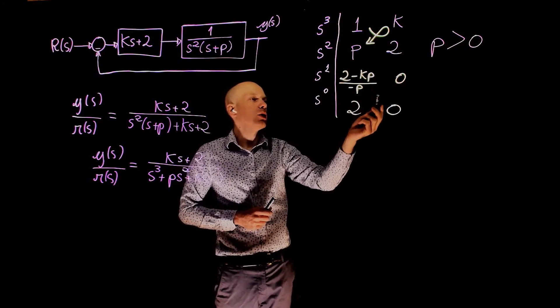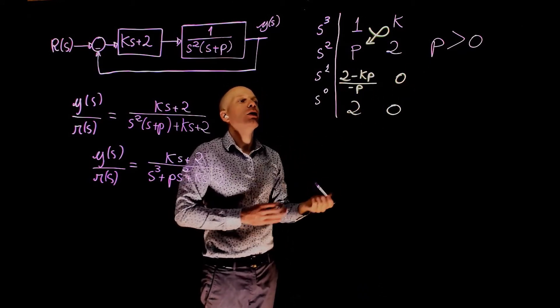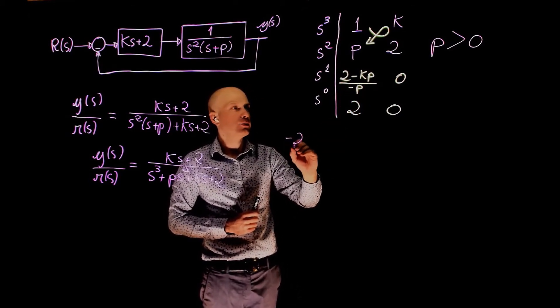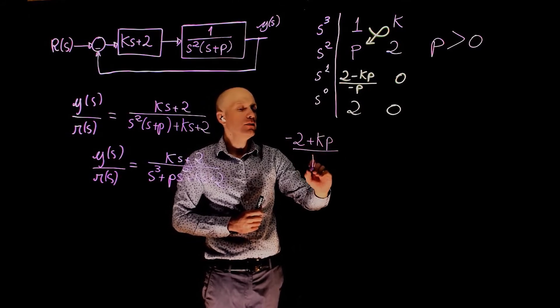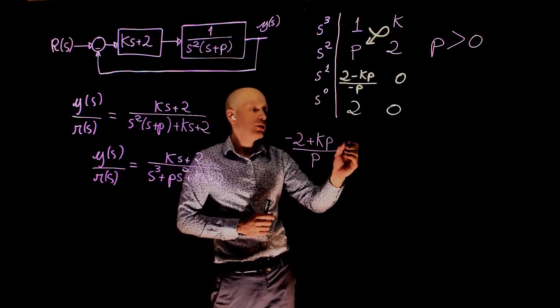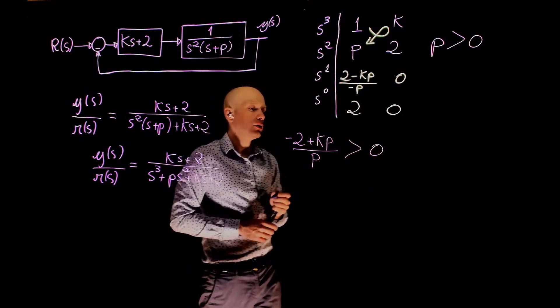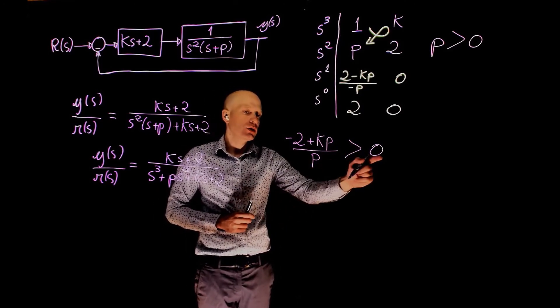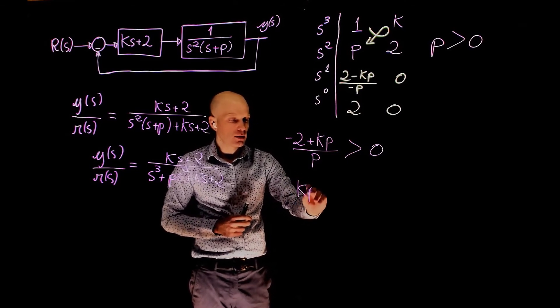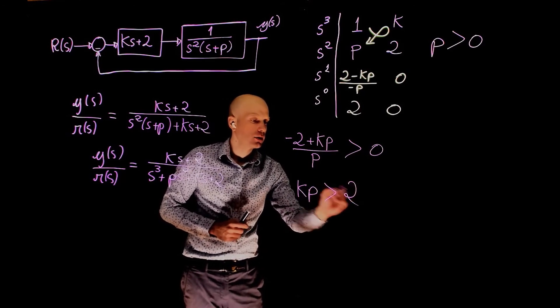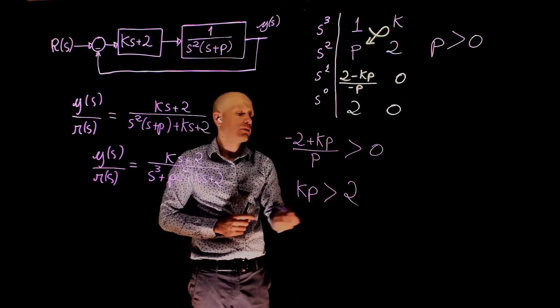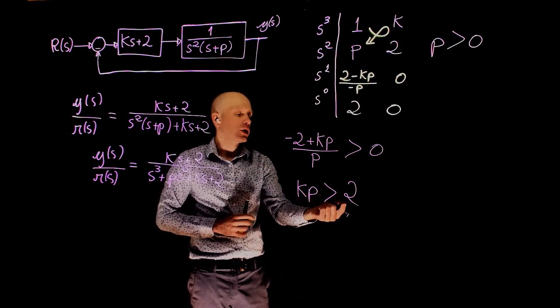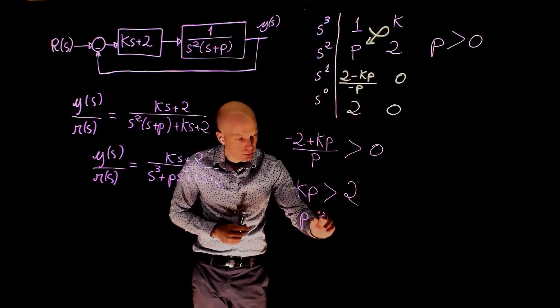Now assuming that this condition is met, we also want this term to be greater than 0. So this term here can be rewritten as negative 2 plus kp over p. And we want this to be greater than 0. Which means that now p multiplies 0, which is 0. And we are left with kp greater than 2 goes to the other side. And negative 2 goes to the other side, positive 2. So here are the conditions for stability. k times p needs to be greater than 2, with p being greater than 0.